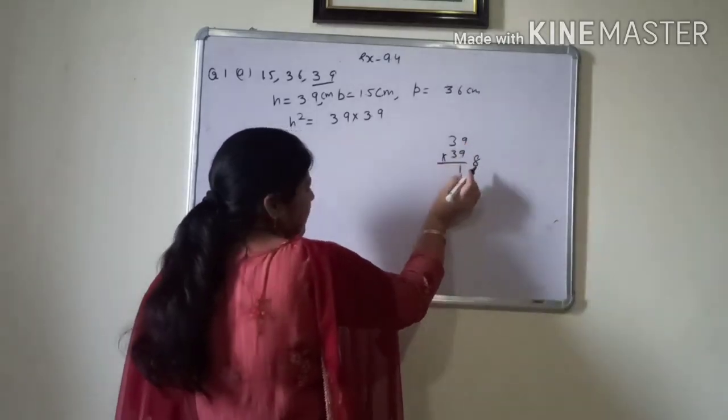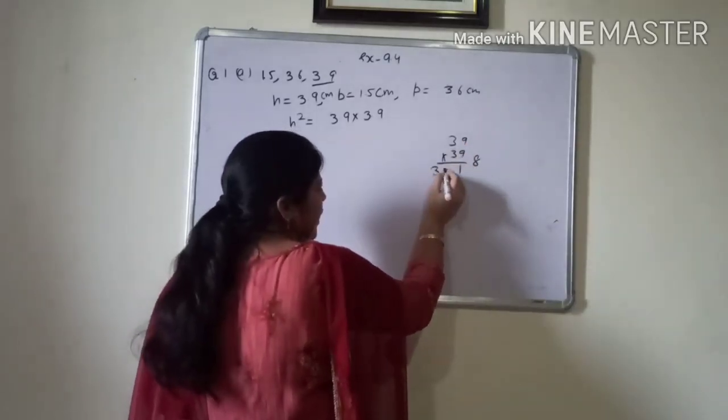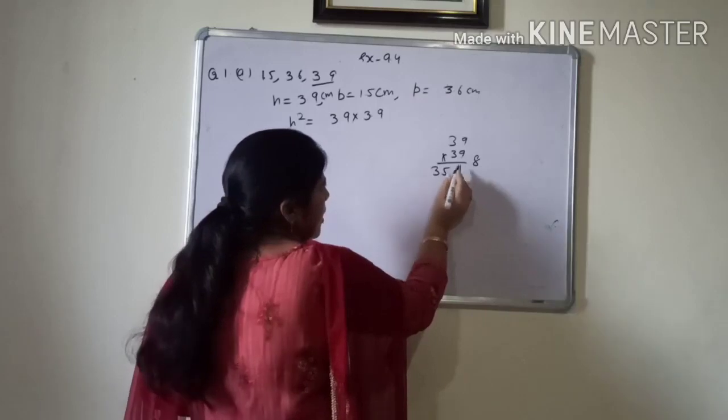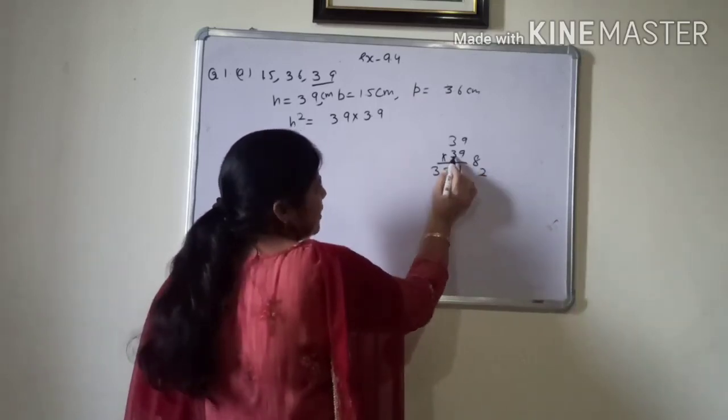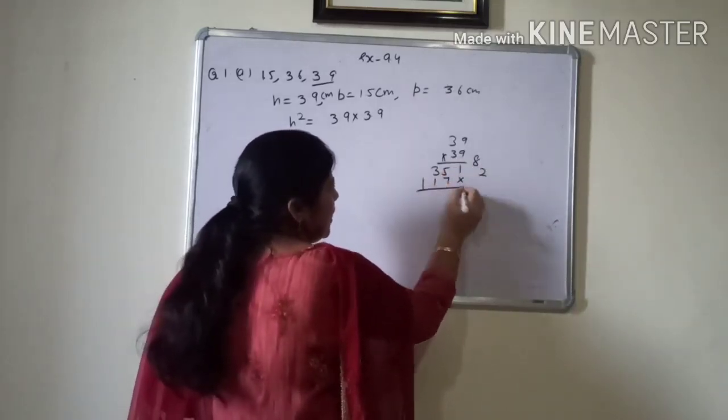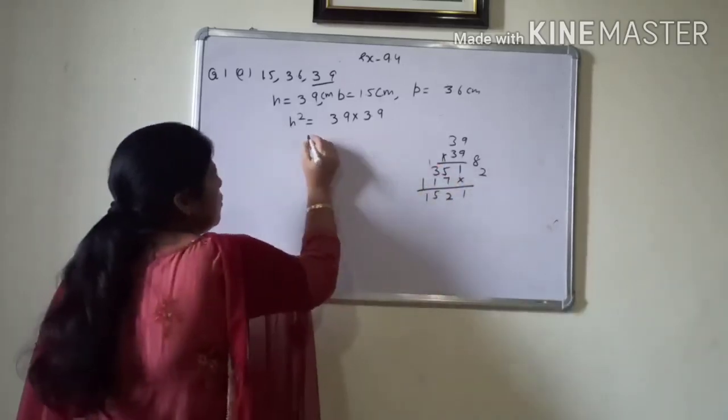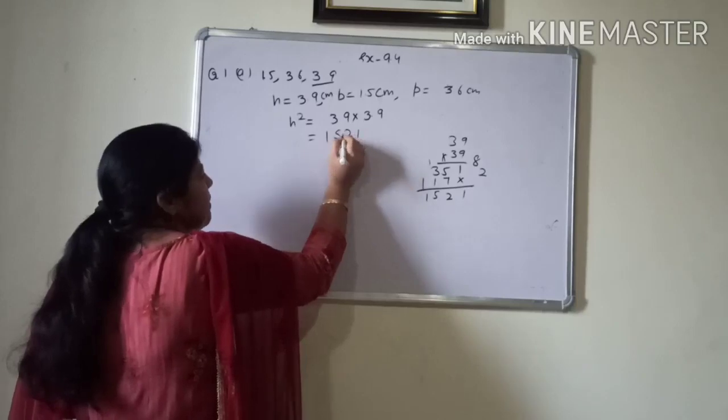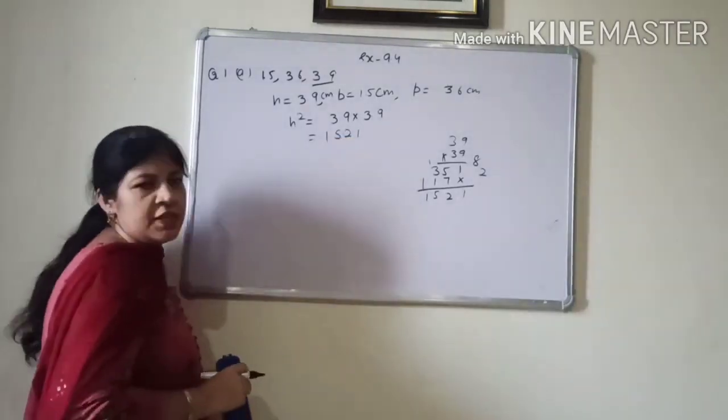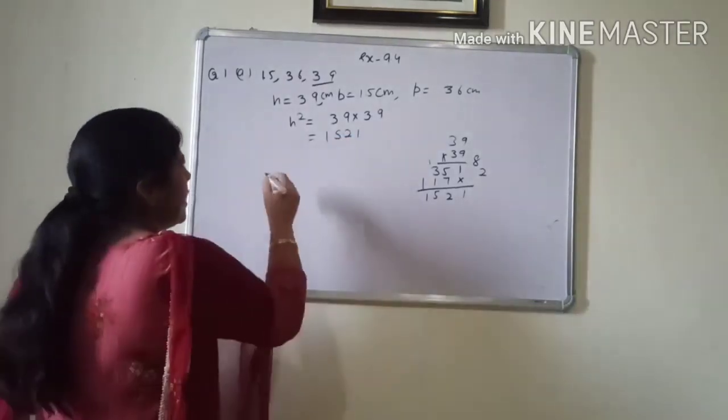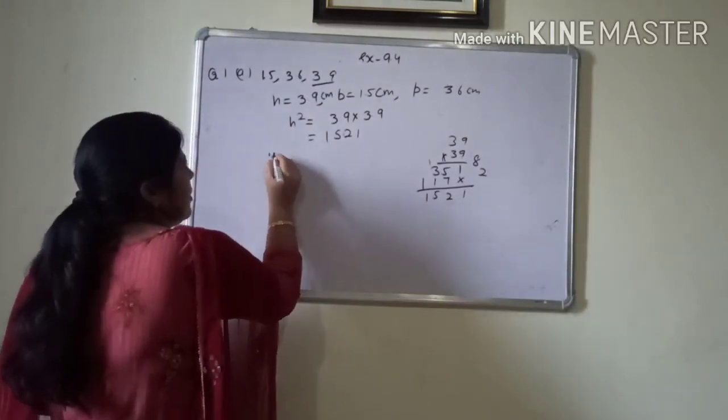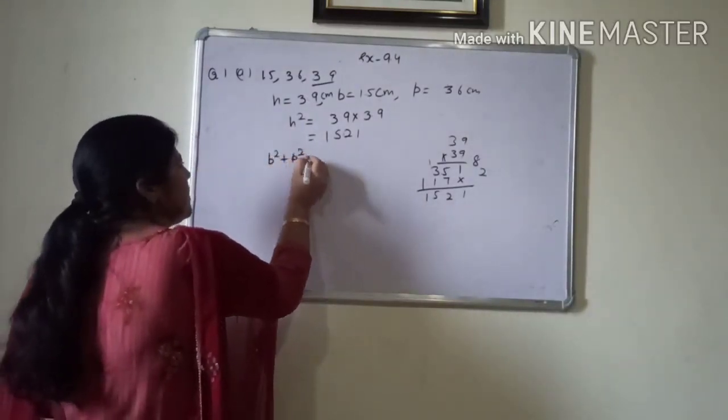You will get 15.21. And the decimal will come after 2.